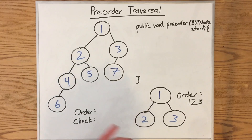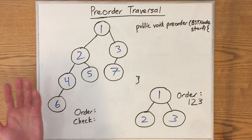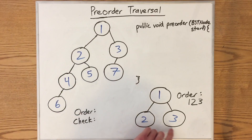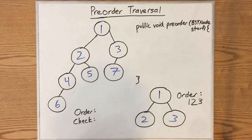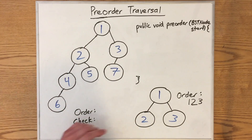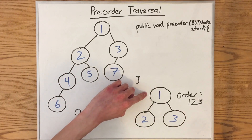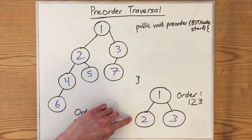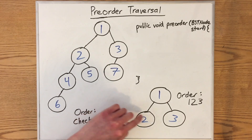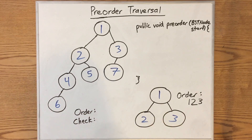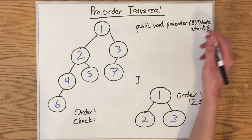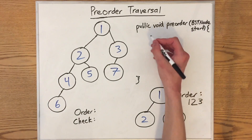Then we try to call pre-order recursively on its left subtree and its right subtree. But since it's a leaf, it doesn't have any children. So we essentially finished the right subtree, so we finished processing the entire tree. We finished the root, we finished processing the left subtree, finished processing the right subtree. How would code for this work? We know that we're given a BST node, which is our root node.